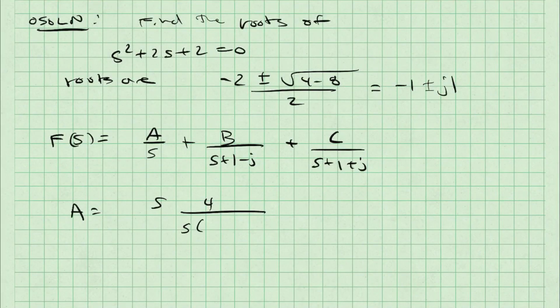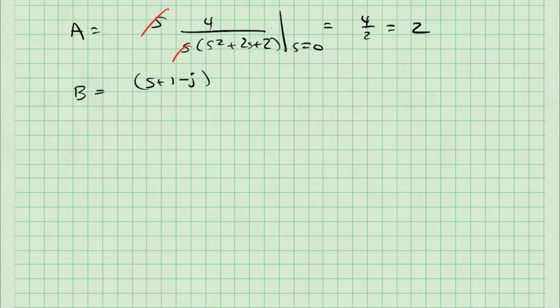Using my standard technique for doing partial fraction expansion, I'll take the whole transfer function and multiply it by s, which is the denominator for the a term. The s's will cancel, and I'll evaluate this when s equals 0. When I do so, I get the result a equal to 2.